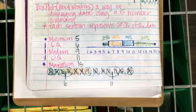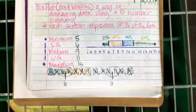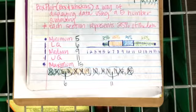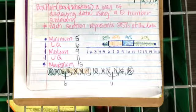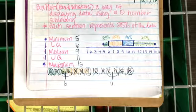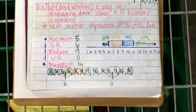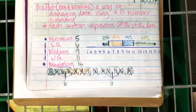What is the interquartile range, or IQR? It's the upper quartile minus the lower quartile. Eleven minus six equals five. The IQR is five.